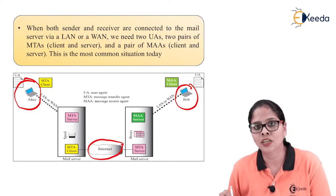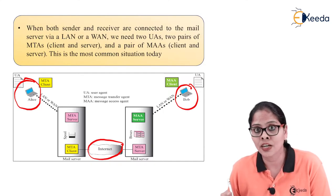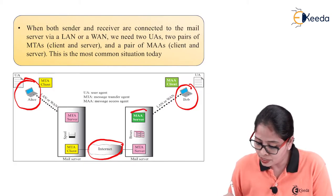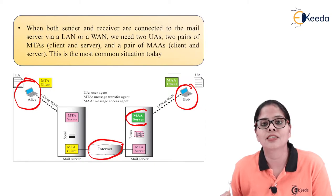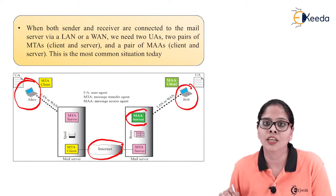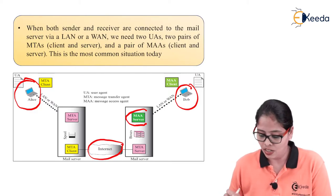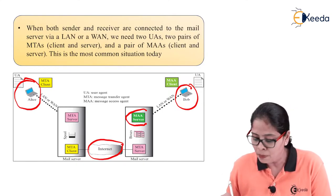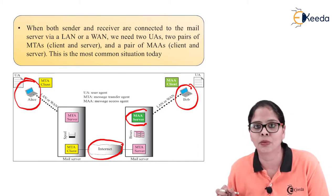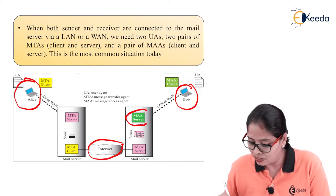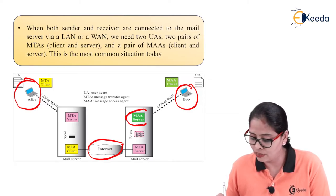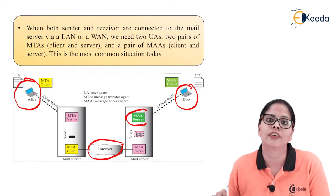Once the mail is received at Bob's mail server, the mail has to be forwarded from the server to Bob's machine. For that, we need the MAA server — message access agent. Here you need to pull your message. The MTA does the forwarding or pushing of the message, where the message access agent does the pulling. With the help of MAA, Bob gets the mail in his mailbox and whenever he opens his mailbox, he can retrieve the mails.